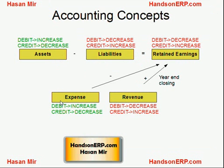Just remember that debiting assets and expenses increases their value — everything else is the opposite. If you debit a liability, liabilities are decreasing in value, as we'll see in the next example. When you debit revenue, you are decreasing revenue in value, and the same applies to retained earnings.